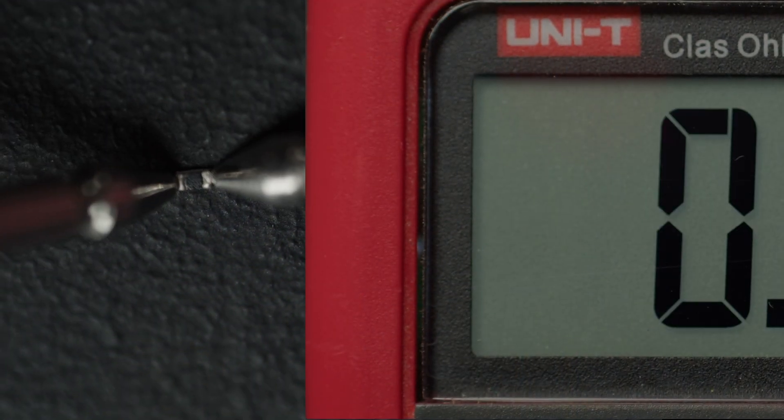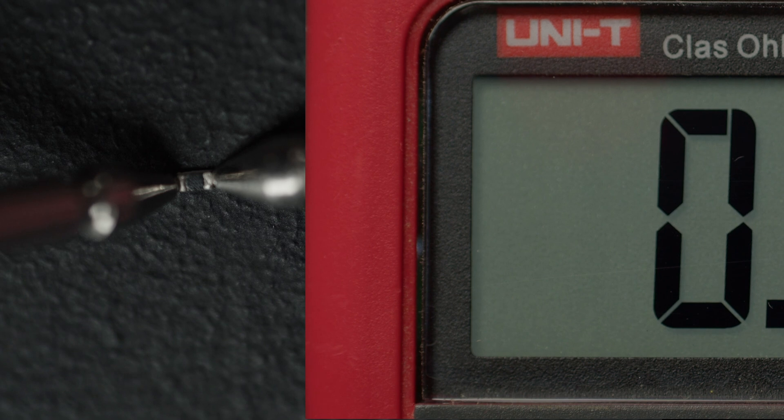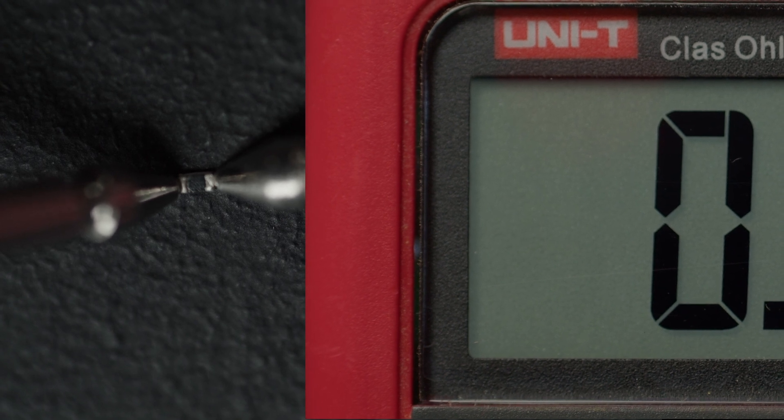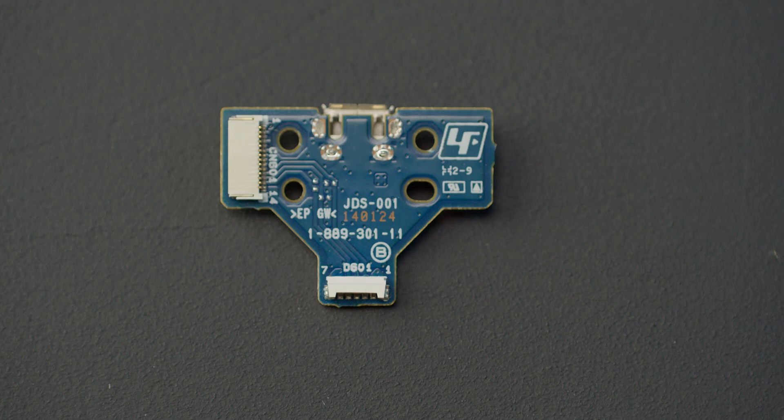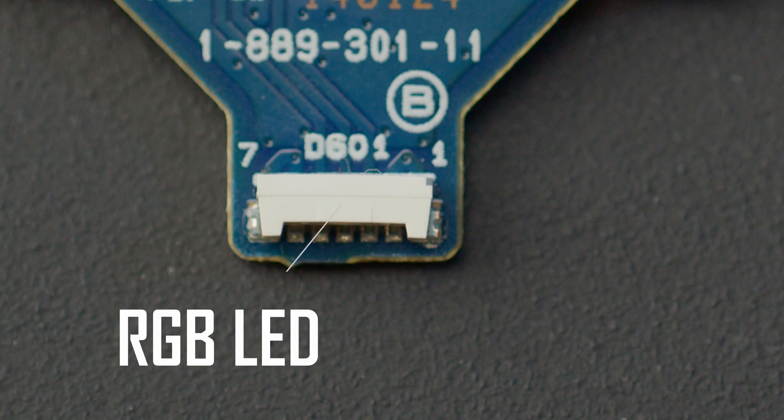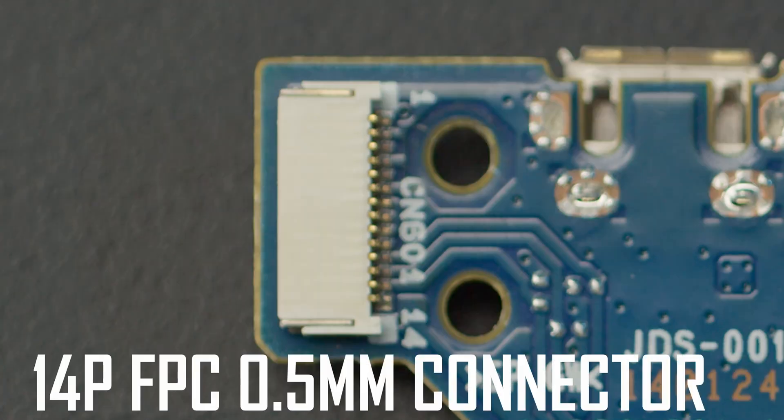That means they're basically just cables, and we can skip them from our design. They don't do anything. On the top side, we have the RGB LED and the 14-pin 0.5mm FPC connector.